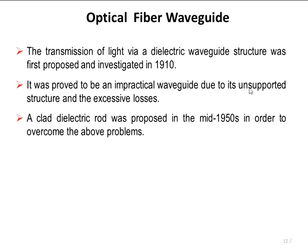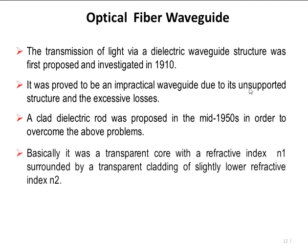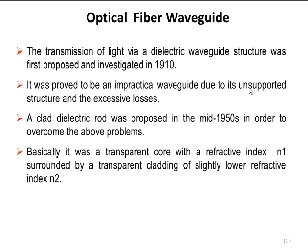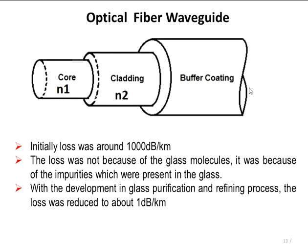In the mid-1950s, a second structure was proposed. It consists of an inner solid glass rod surrounded by an outer solid glass rod. The inner rod is called the core and the outer glass rod is called the cladding. The core has a higher refractive index than the cladding. The structure is shown in the figure. For this structure also, initial loss was quite high, around 1000 dB per kilometer.